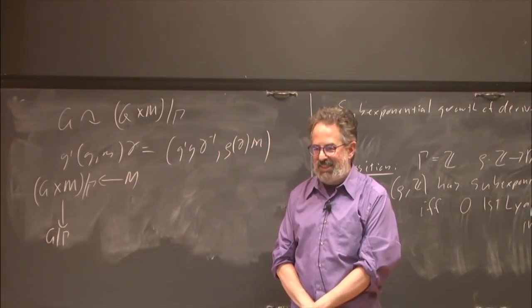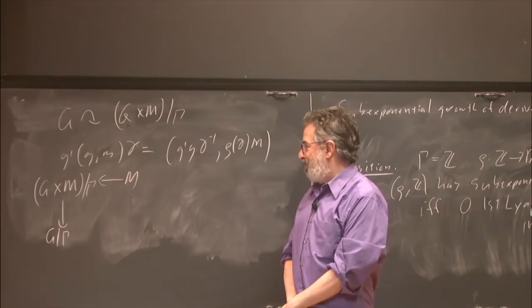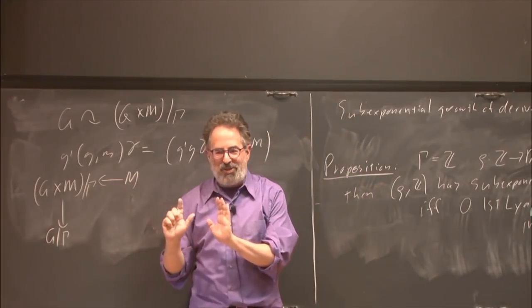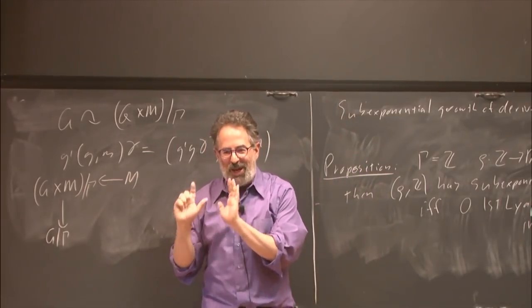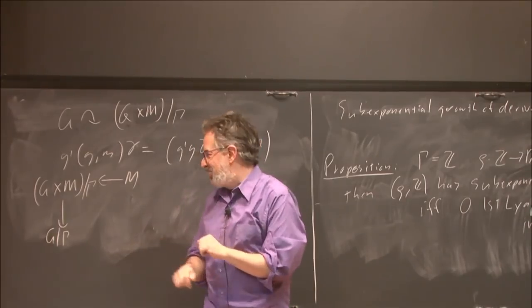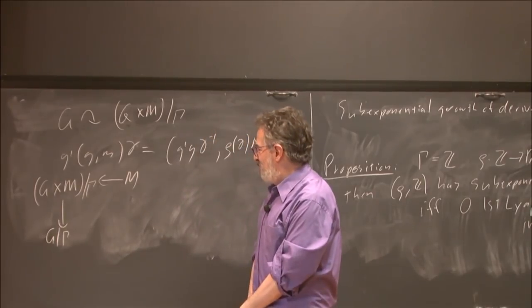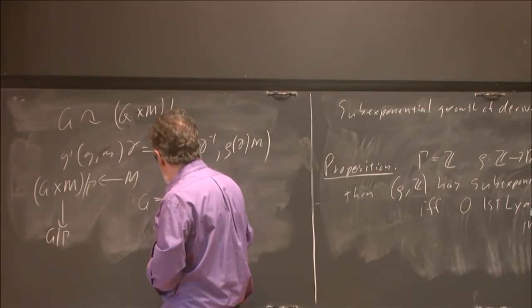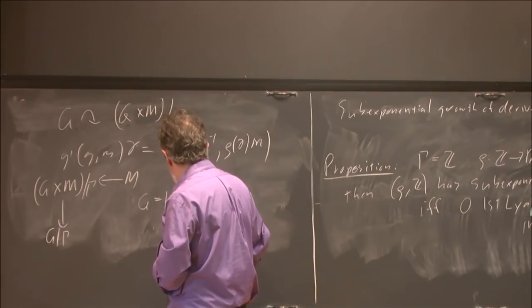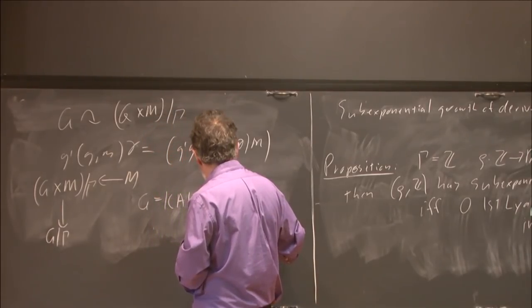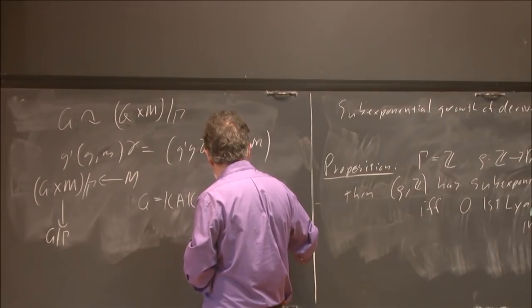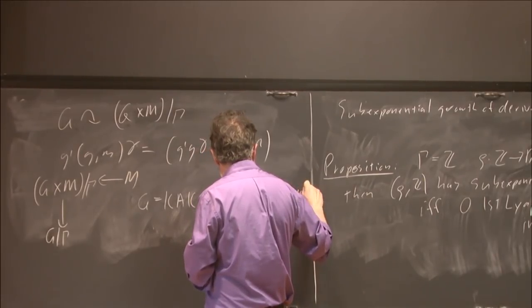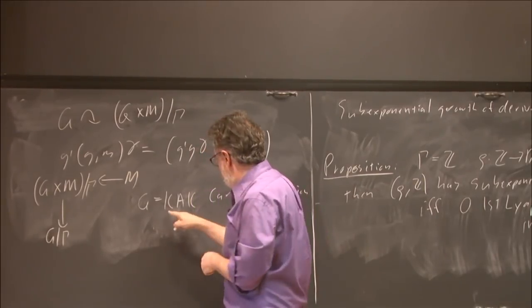So how do we go about proving step one—sub-exponential growth of derivatives? The first thing you do is you don't like working with Gamma actions because Gamma is a discrete group with absolutely no algebraic structure. SL(N,Z) gives you the illusion that these groups have algebraic structure, but as soon as you move to a co-compact lattice there's no algebraic structure worth understanding. So what do you do? You build a G action on a manifold written as G times M mod Gamma—a fiber bundle with fiber M over G mod Gamma.